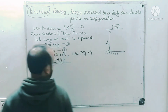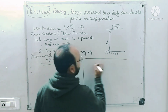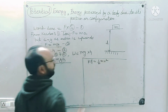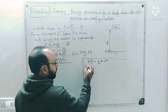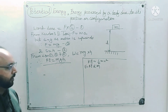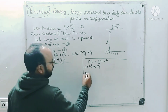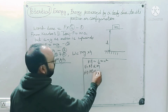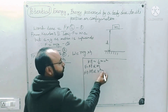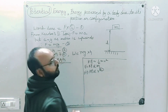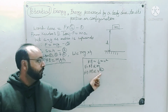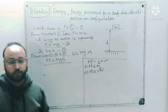Regarding kinetic energy: first, kinetic energy is directly proportional to mass m. Second, kinetic energy is directly proportional to v squared. So if velocity is doubled, kinetic energy becomes four times; if velocity is tripled, kinetic energy becomes nine times.